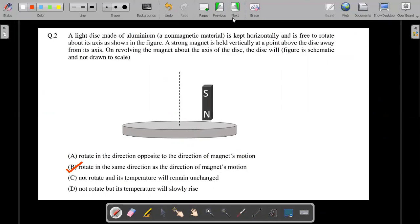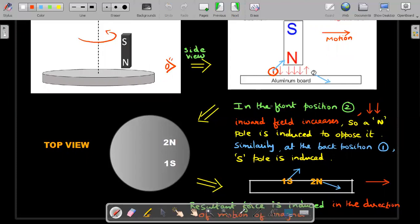The same aspect can be explained using eddy currents and all, it would be slightly longer. But in the exam situation, I would say this could be the easiest way of induced poles.